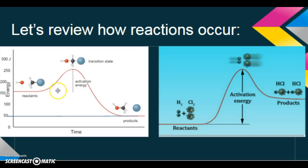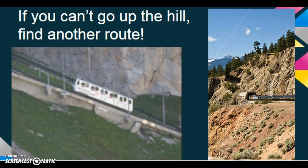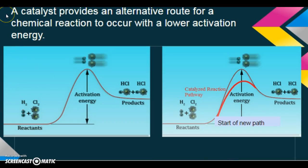So for a reaction to happen, you have to have the extra energy to get to the top of the activation energy peak, and then you can produce your products. But what if you can't get enough energy to reach the activation energy? You just can't quite get all the way up as high as you need to go. Well, we have a solution for that. If you can't make it up the hill, you find another route. If you can't get up the mountain, you build a tunnel through it. And so chemically speaking, that's where the catalyst comes in. The catalyst provides an alternative route for a chemical reaction to occur with a lower activation energy.